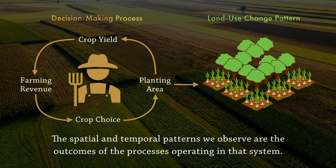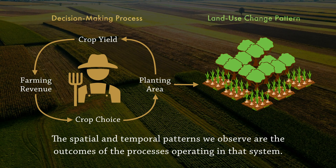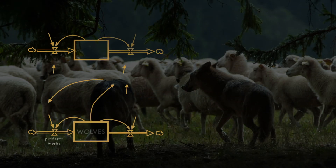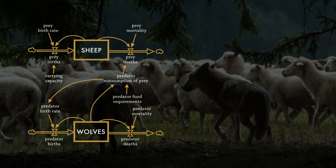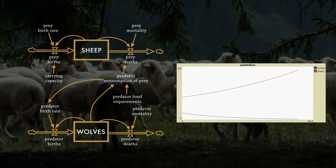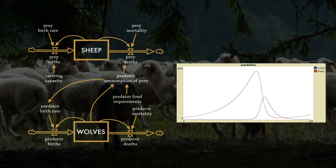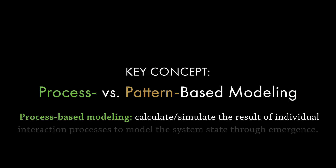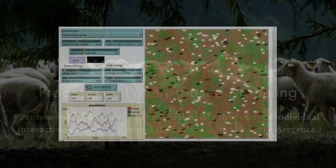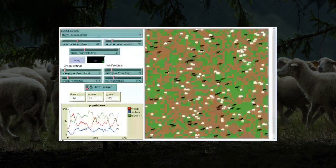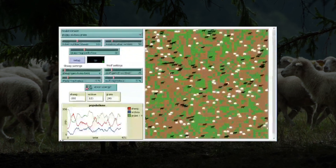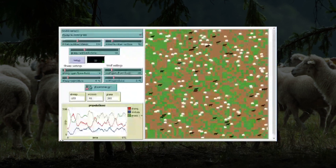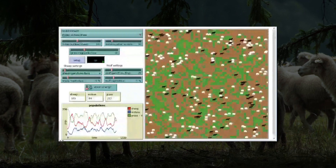ABMs, unlike pattern-based modeling approaches, explicitly represent the processes that produce patterns of interest and are thus considered process-based models. To illustrate this difference further, let's compare a pattern-based and process-based representation of the classic predator-prey system. The systems dynamics model of interactions between sheep and wolves uses relatively few equations relating rates of interactions — births or predation — to overall numbers, producing the classic Lotka-Volterra predator-prey cycle. In contrast, in the agent-based model of the same system, there are no equations governing the overall number of sheep or wolves. Rather, each agent has a set of equations determining if it moves, reproduces, or eats. Total numbers of sheep and wolves are the emergent result of cumulative interactions between sheep and wolf agents in the environment, represented as grass. In the ABM, the disaggregated process of agent interactions is modeled explicitly and gives rise to similar predator-prey cycles.